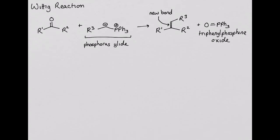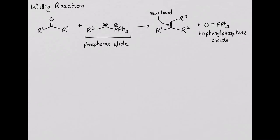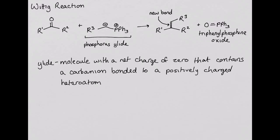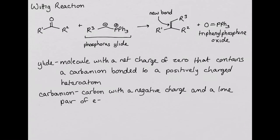The Wittig reaction takes advantage of the reactivity of the phosphorus ilid. An ilid is a molecule that has a net charge of zero, but that contains a carbanion bonded to a positively charged heteroatom. A carbanion is a carbon that has a negative charge and a lone pair of electrons, and a heteroatom is a non-carbon atom such as phosphorus.